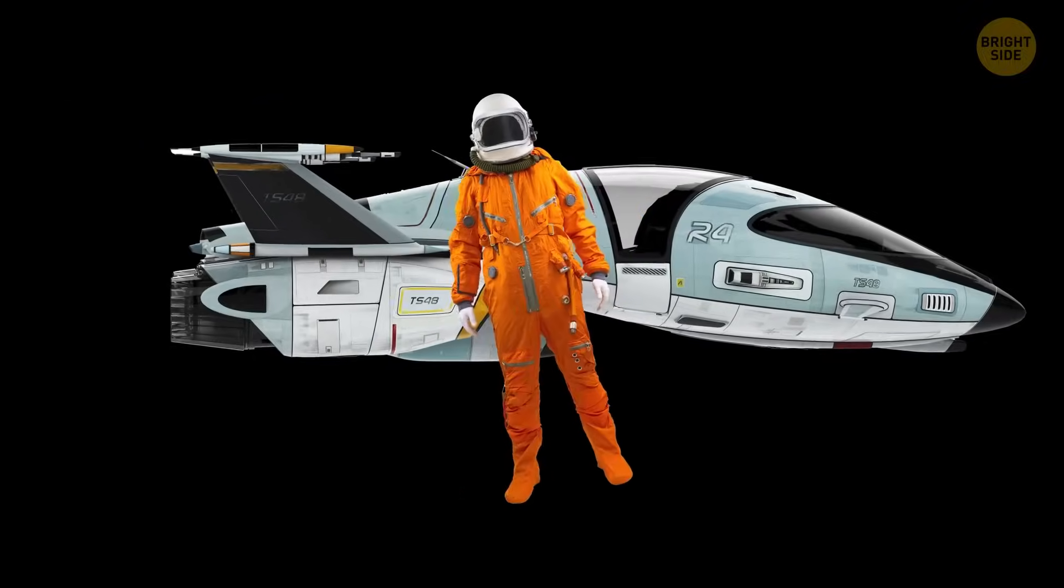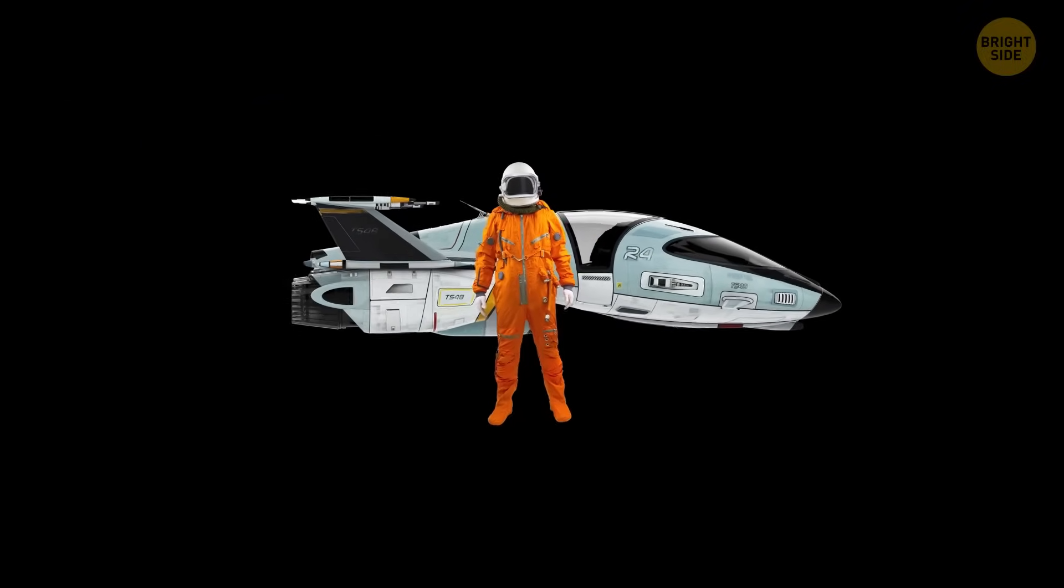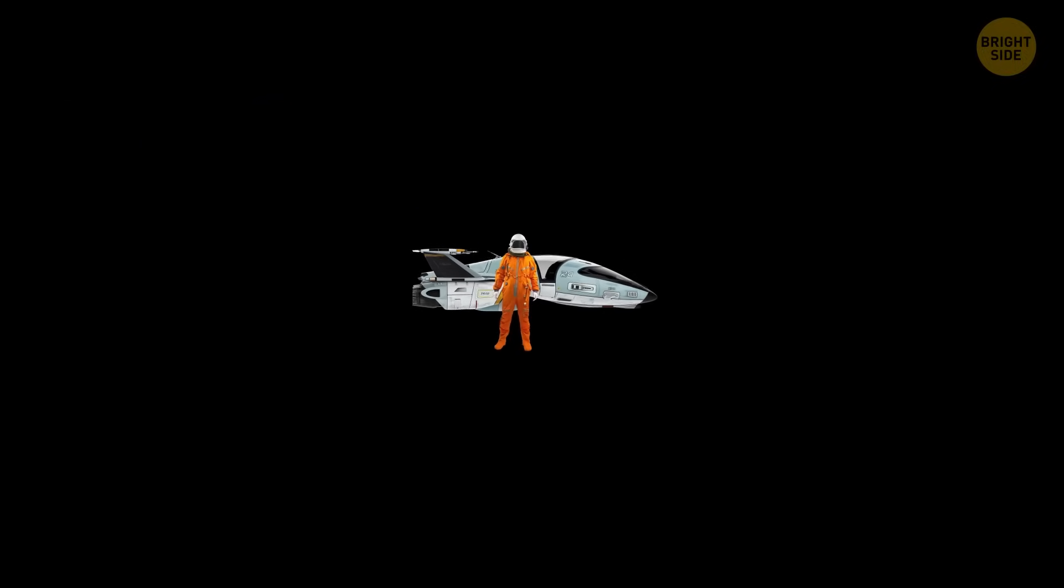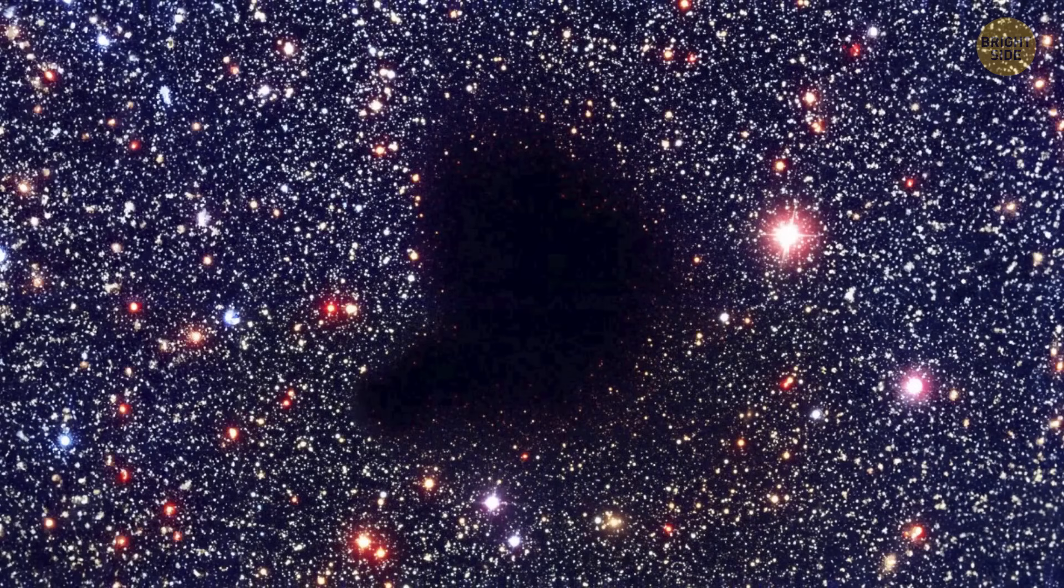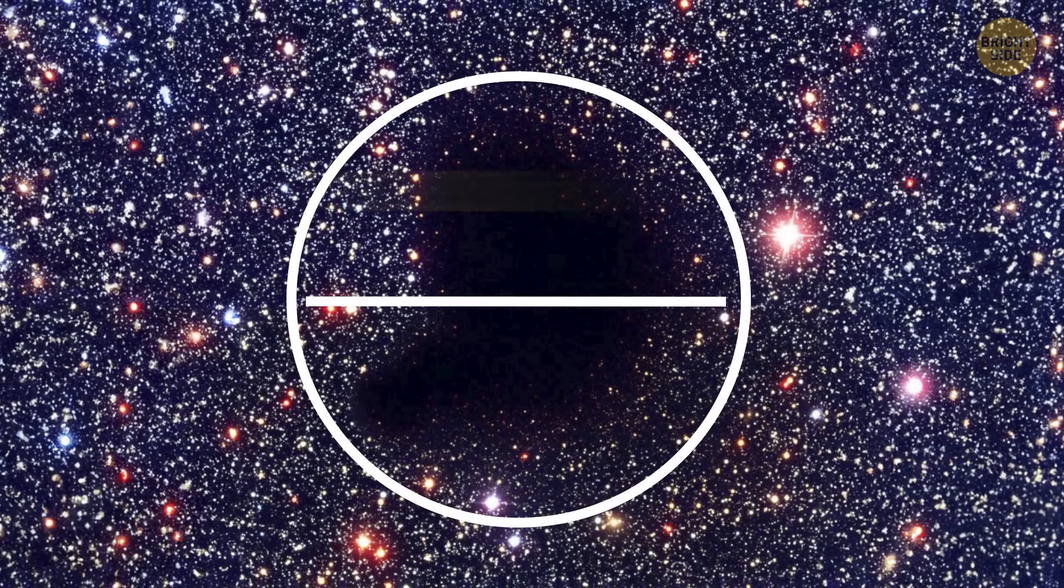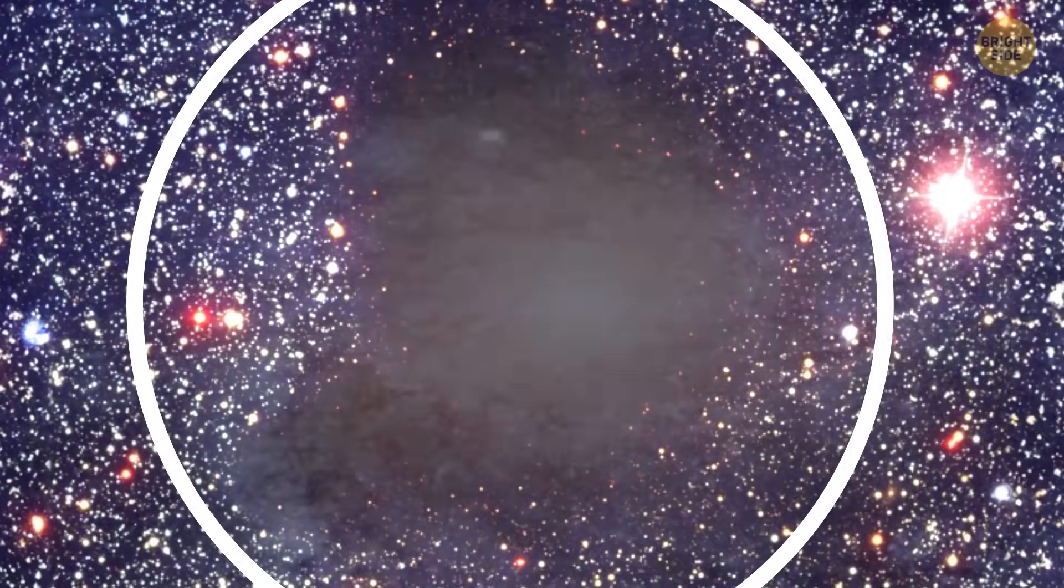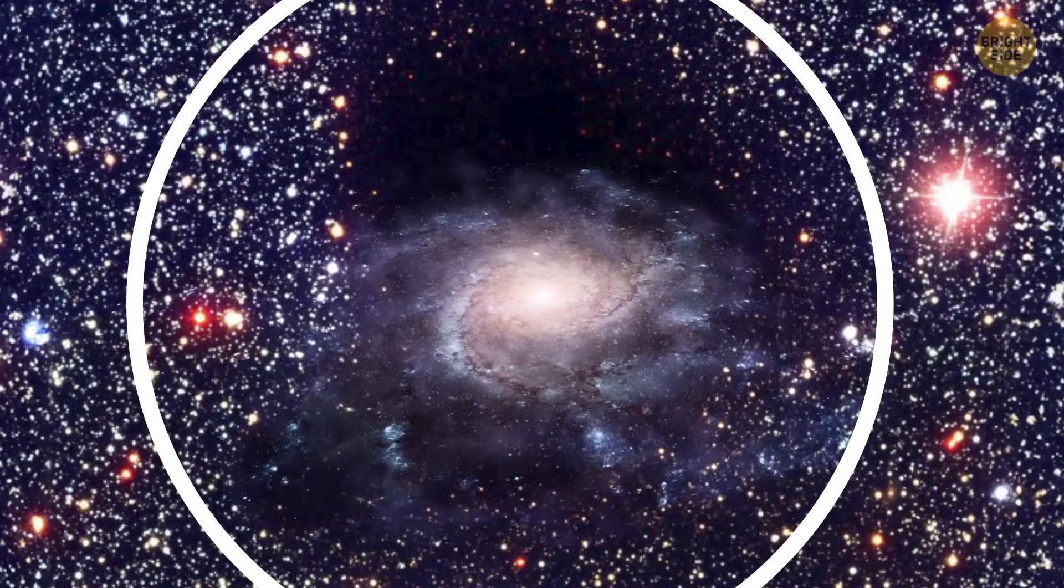A blank void with no galaxies, stars, planets, or asteroids. You can't see anything. The void is a roughly spherical region of about 330 million light-years across. Our whole Milky Way galaxy could fit in there billions of times over.